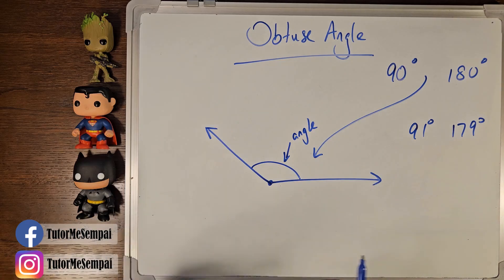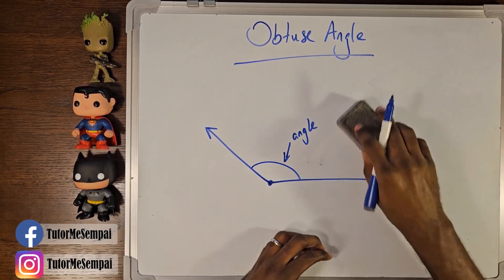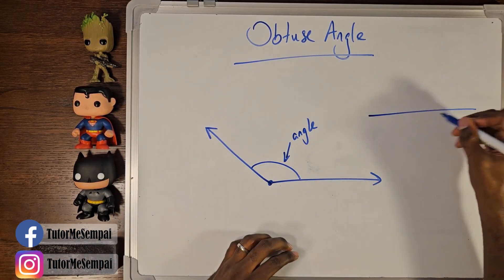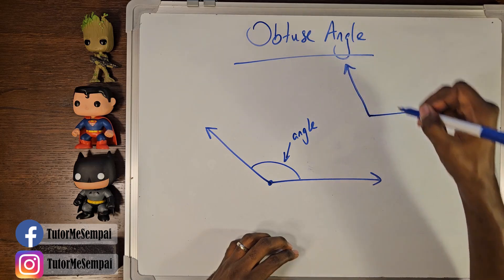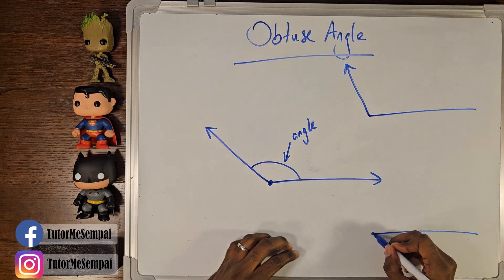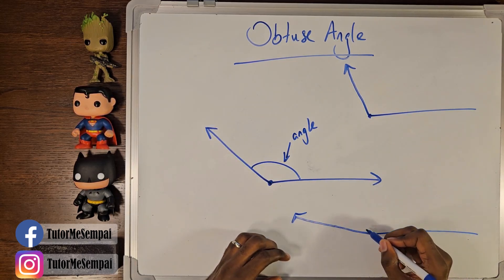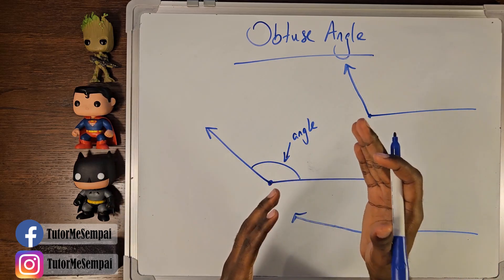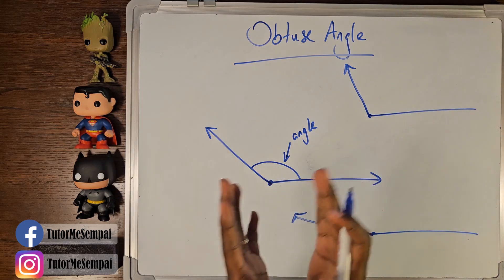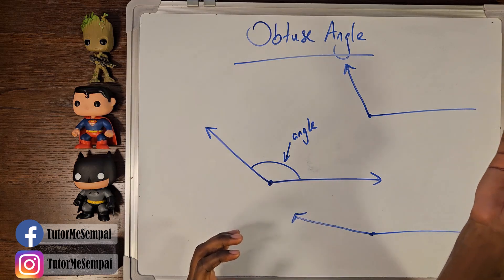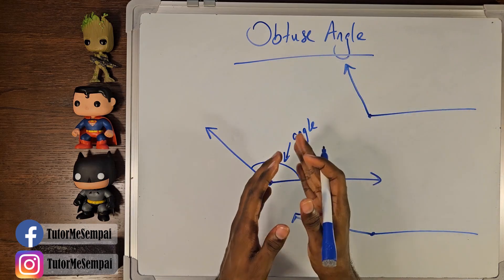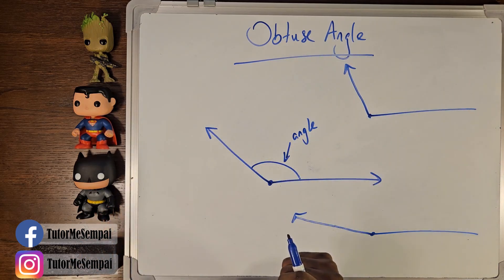Just like your acute angles, obtuse angles can have different forms. Your angle can range from something just barely past 90 to something very close to 180. Your obtuse can't hit that 180 degrees because that's going to be a different type of angle.